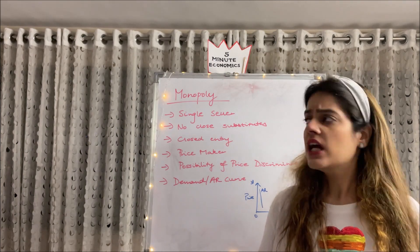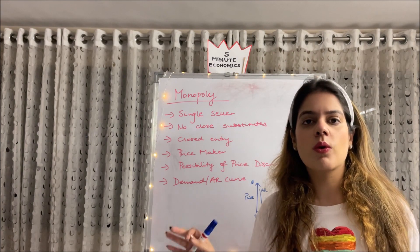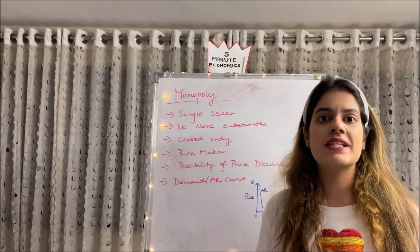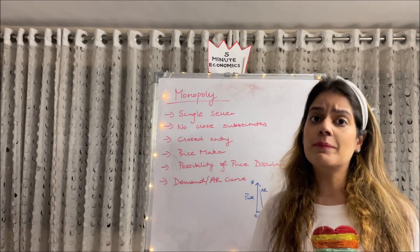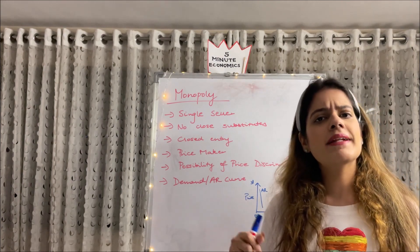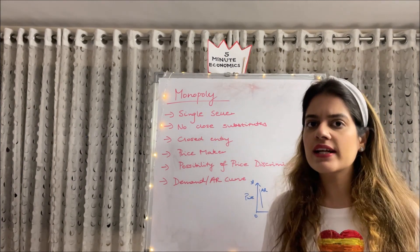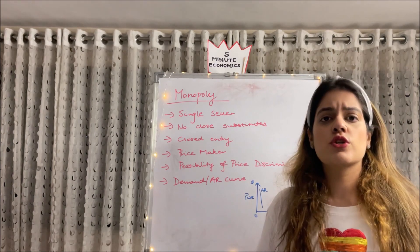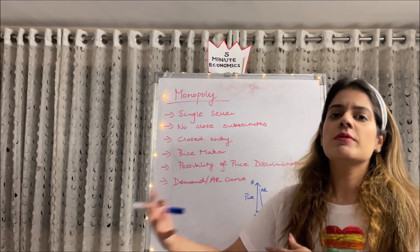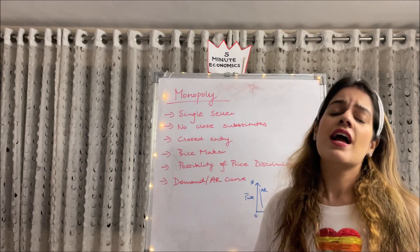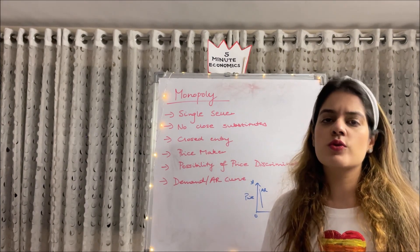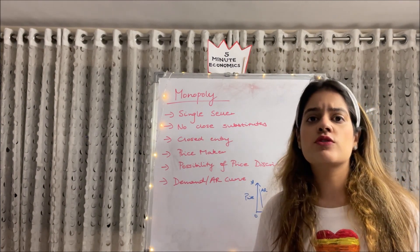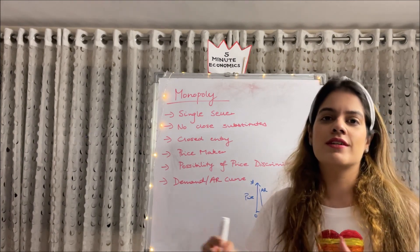Coming to our second type of market structure — monopoly. Here there is a single seller, meaning he is the sole controller of the whole market. The distinction between industry and firm disappears because there is only one seller. He is the king of the market — there are many buyers but only one seller. For example, the Indian government has a monopoly over the railway sector — it is solely and wholly run by the Indian government. Secondly, there are no close substitutes — for a monopoly to exist, there must be no close substitutes. Railways may have substitutes like airways or buses, but the price, comfort, or service cannot be truly substituted.